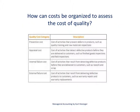Staying with the theme of organizing costs to help managers, we'll now focus on how costs can be organized to assess quality. There are four categories used to assess quality of products — called the cost of quality: prevention costs, appraisal costs, internal failure costs, and external failure costs.